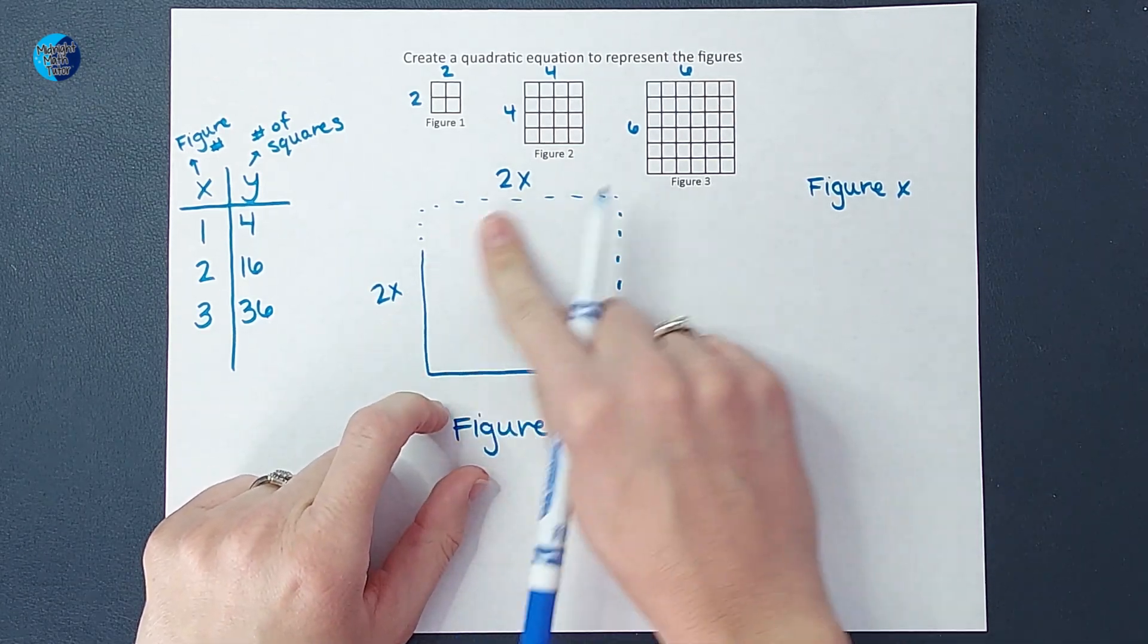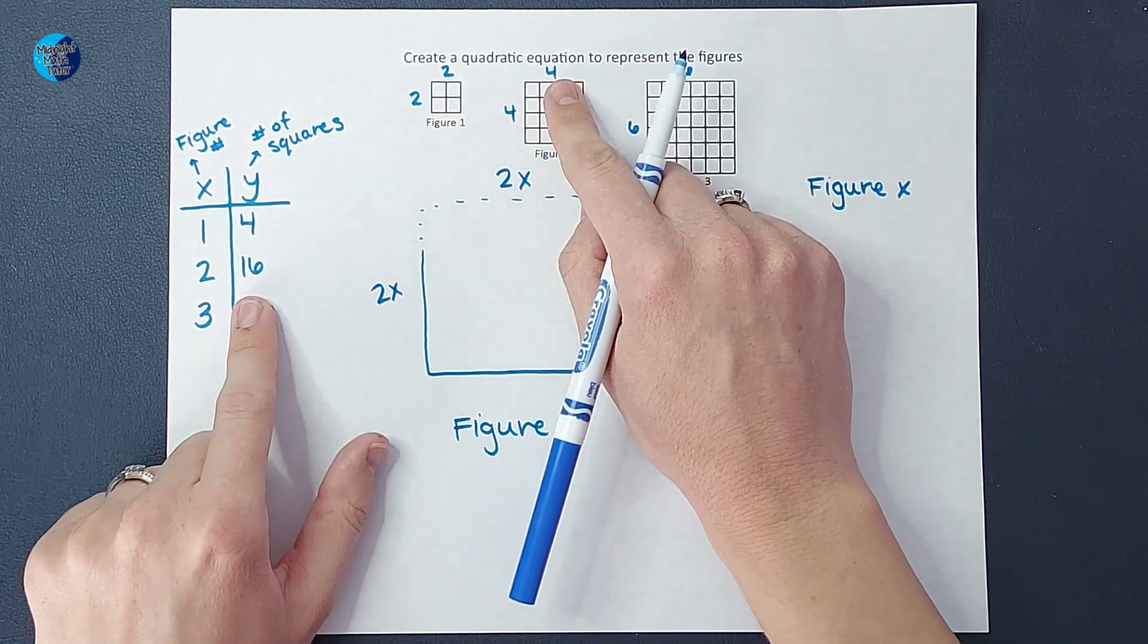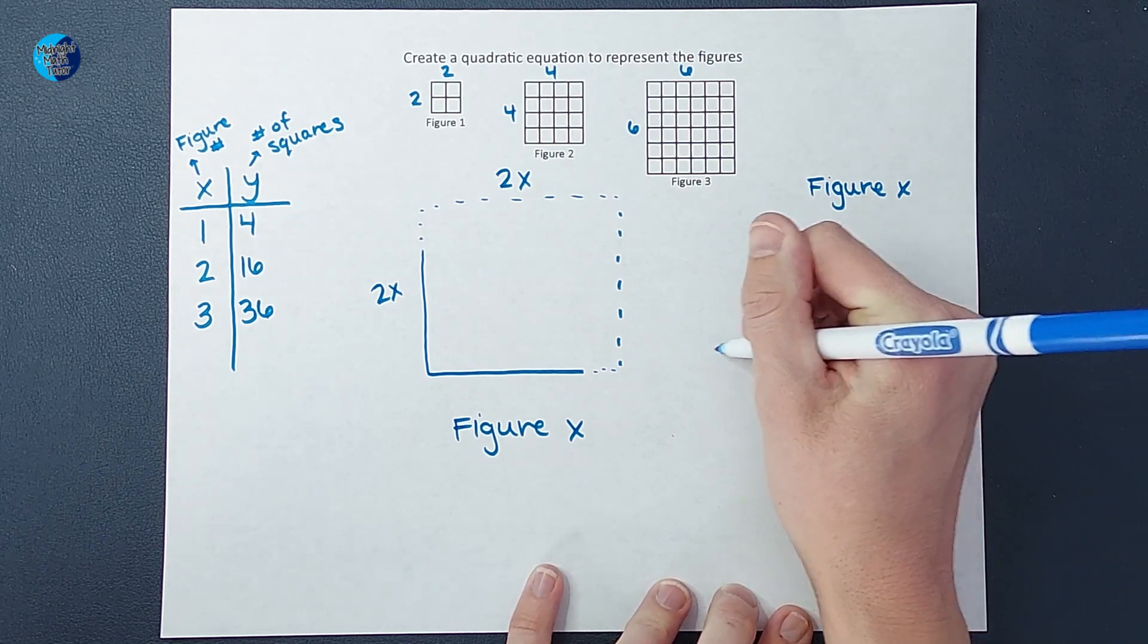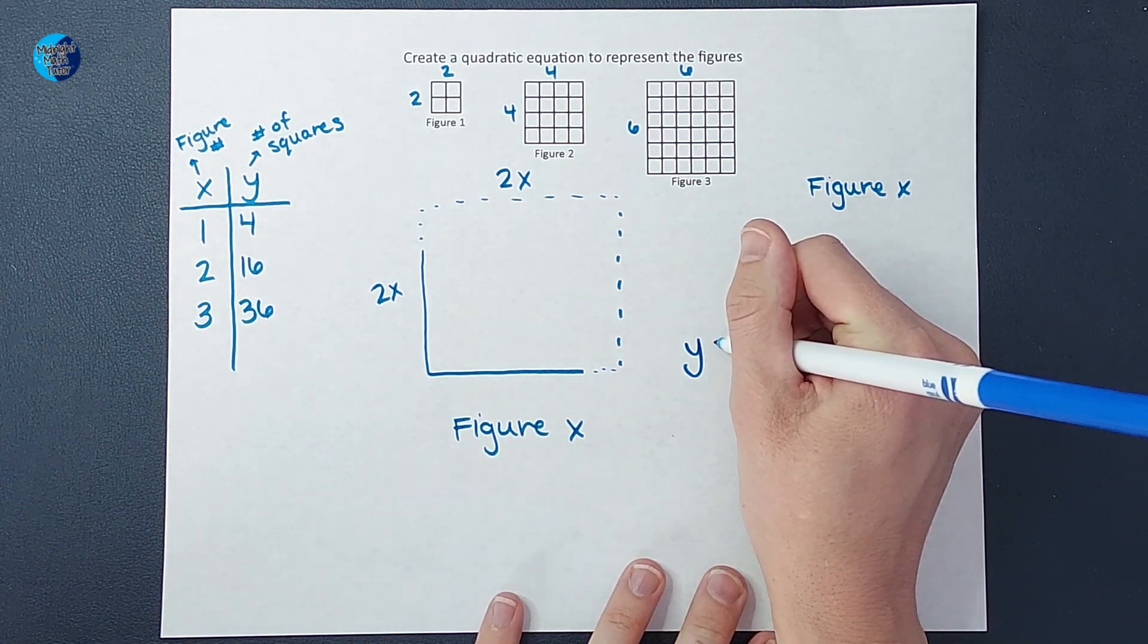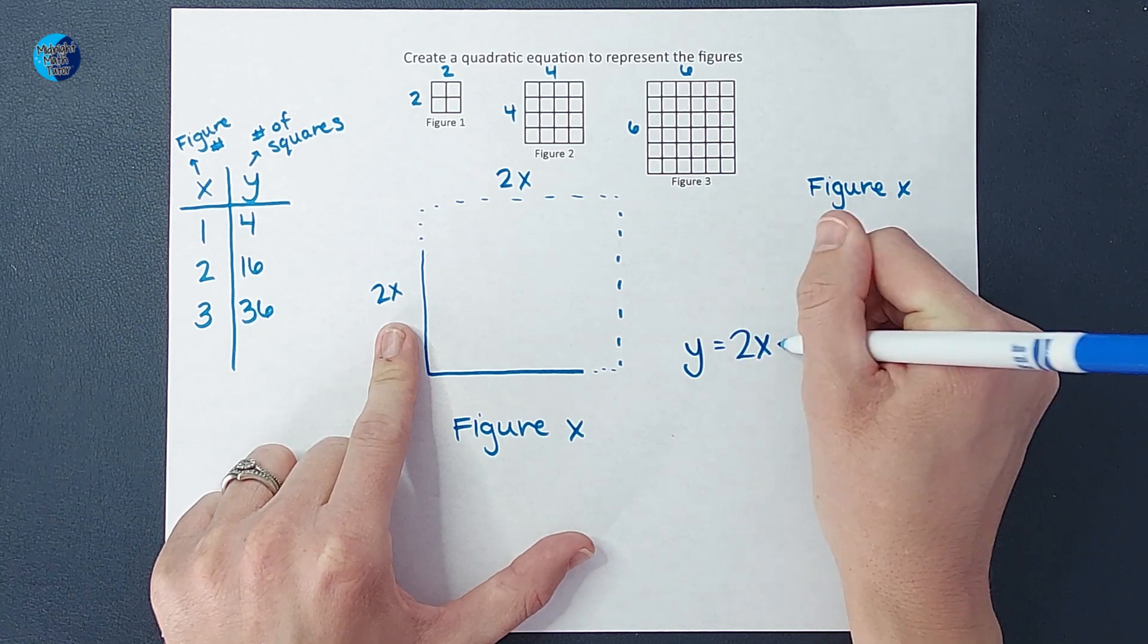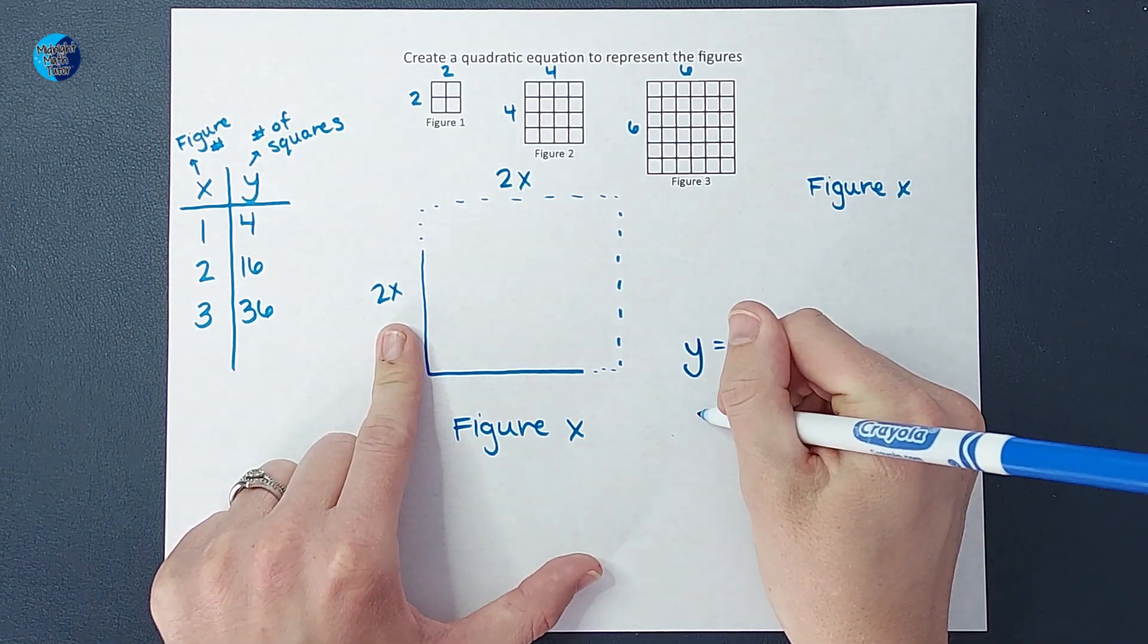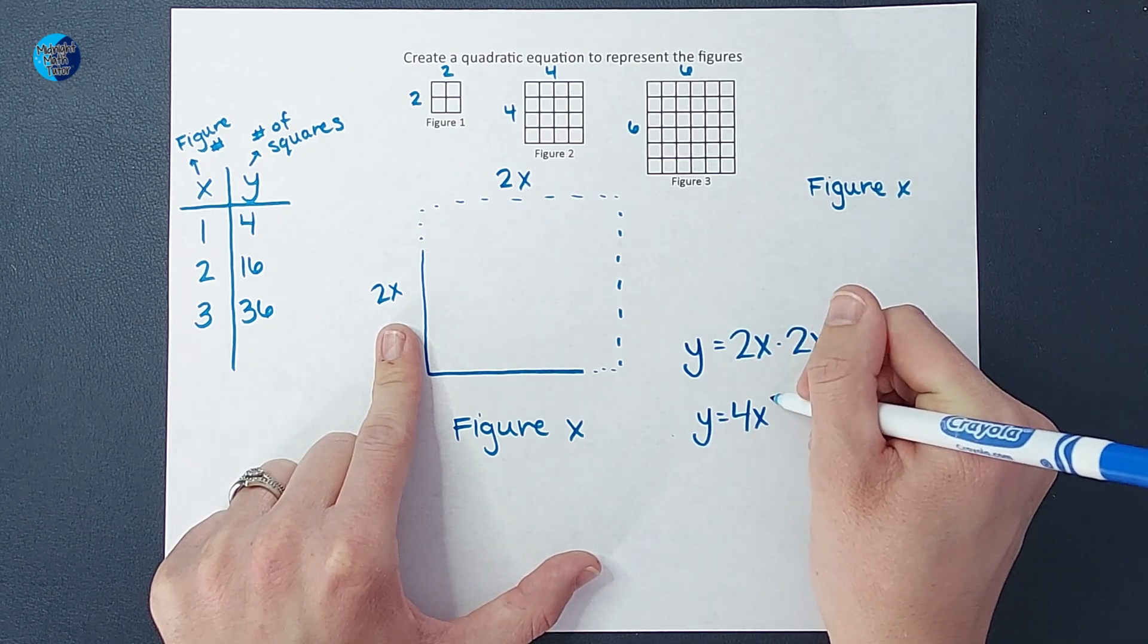My equation here for figure x, whatever figure we want, is going to be the number of squares. Y is equal to the length times the width, so 2x times 2x. Now we do like to multiply those if we can, so we are going to say y equals 2 times 2 is 4, x times x is x squared.